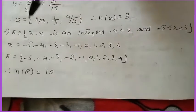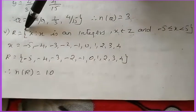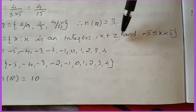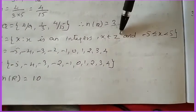See here, R is equal to x such that x is an integer, where x belongs to Z. So what is the meaning of Z? Z means it is the integers.